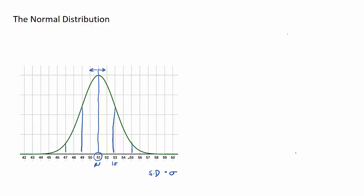So this would be one standard deviation above the mean, two standard deviations above the mean, this would be one standard deviation below the mean, and this would be two standard deviations below the mean.